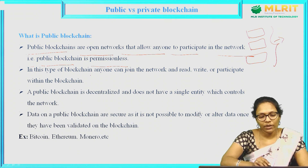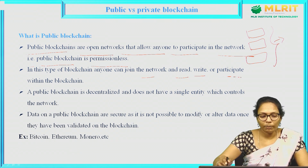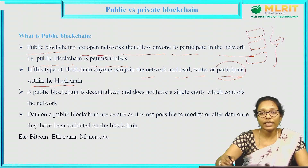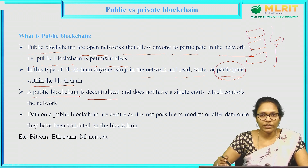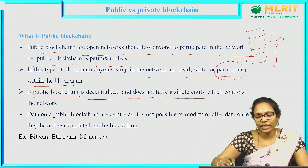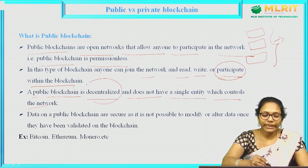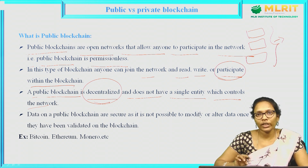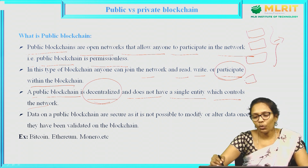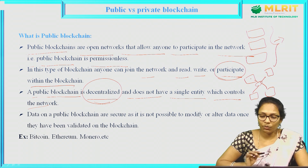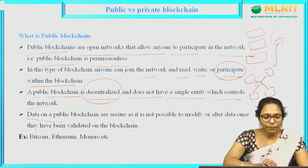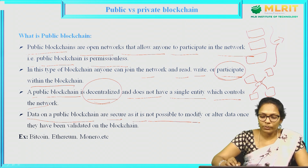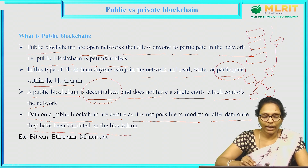In this type of blockchain, anyone can join the network. They can read, write, or participate within the blockchain — participate in the sense that they can validate the transaction also. Public blockchain is decentralized; blockchain itself is decentralized and does not have a single entity which controls the network. Public blockchain is completely decentralized — there is no central or single authority to monitor the network. Each and every node in the network has equal access, equal decision-making rights. The data on a public blockchain are secure as it is not possible to modify or alter data once they have been validated on the blockchain.